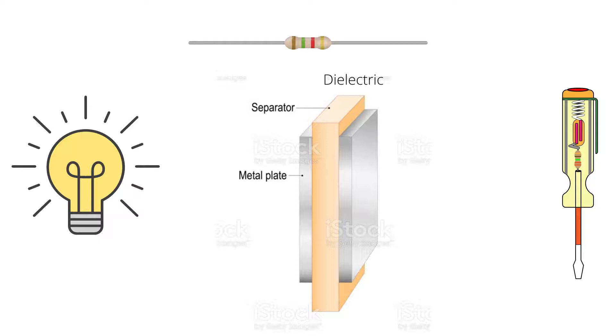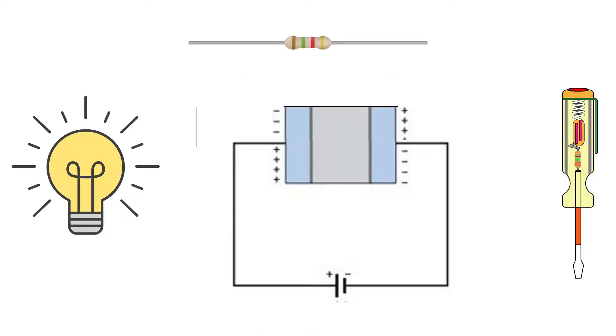Before applying voltage, the two plates of the capacitor are electrically neutral—that is, both have equal amounts of positive and negative charge. But once voltage is applied, the electrons will be pushed to the negative terminal of the capacitor.